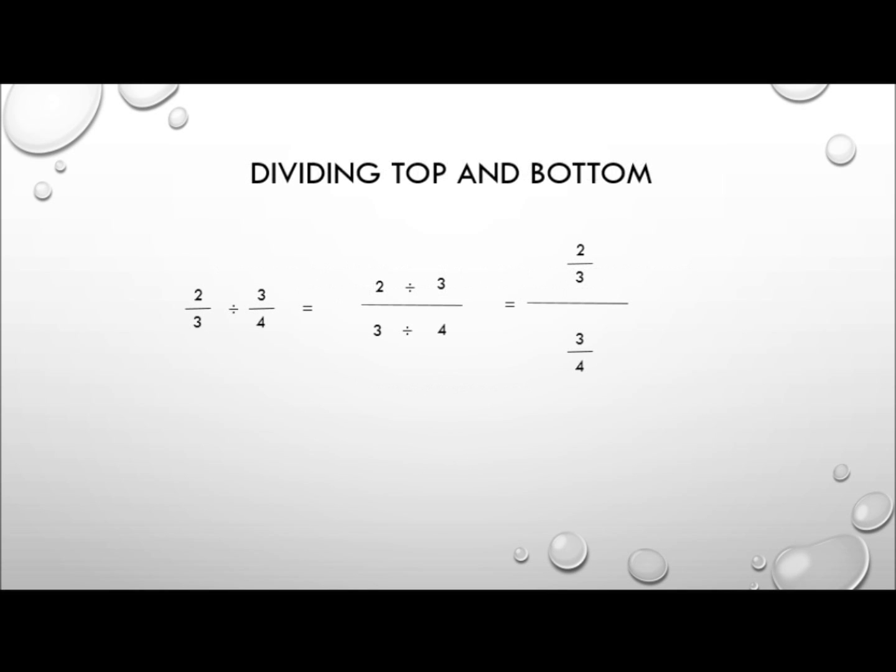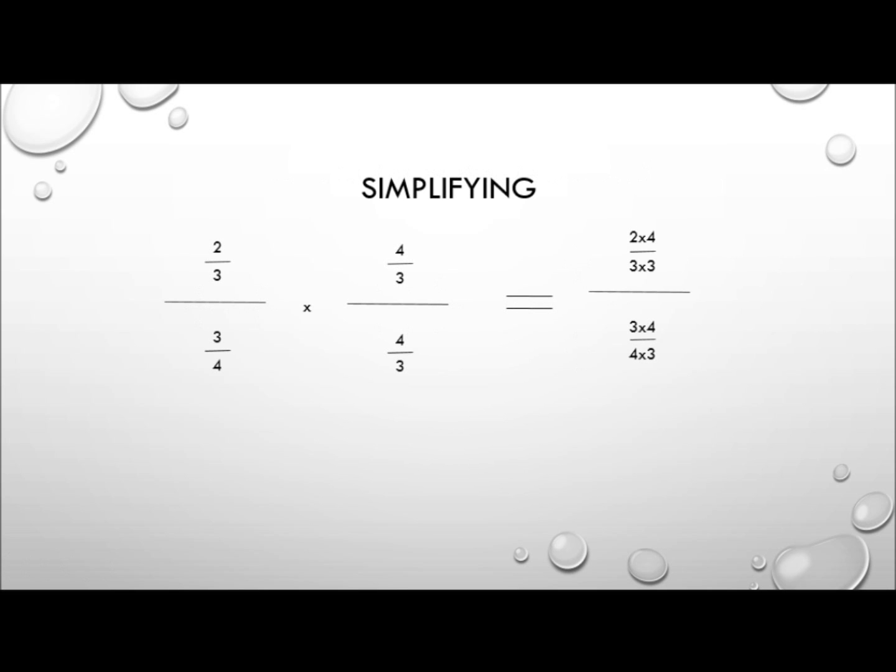Okay, so if we divide the top and bottom, 2 thirds divided by 3 quarters would be 2 divided by 3, all over 3 divided by 4, which actually comes out to 2 thirds over 3 quarters. Okay, so what we have here is called a complex fraction, 2 thirds over 3 quarters. And what we're looking to do is simplify that complex fraction to turn it into a simple fraction.